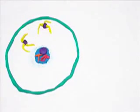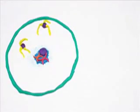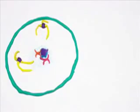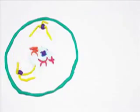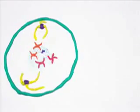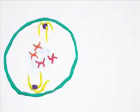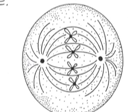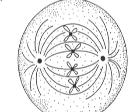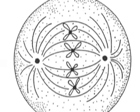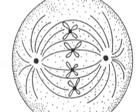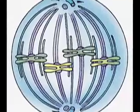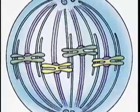In prophase, visible chromatins form and mitotic spindles begin to develop as the nucleus disappears. In metaphase, chromosomes align as spindles and kinetochores combine — this organization is necessary to ensure each cell receives a copy.